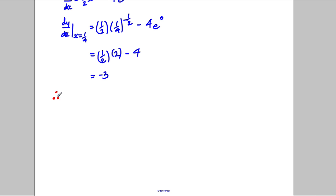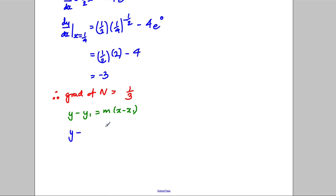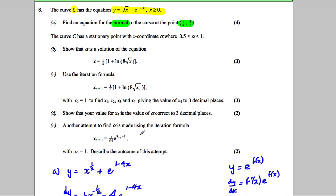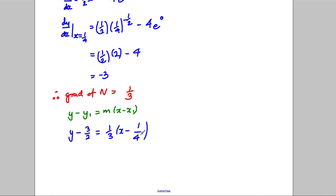The gradient of the normal is the negative reciprocal of negative 3, which is a third. Therefore, using the straight line formula y subtract y1 equals m times x subtract x1, we get y subtract 3 over 2 equals a third times x subtract a quarter. We could leave the answer like that since it wasn't a 'show that' question.